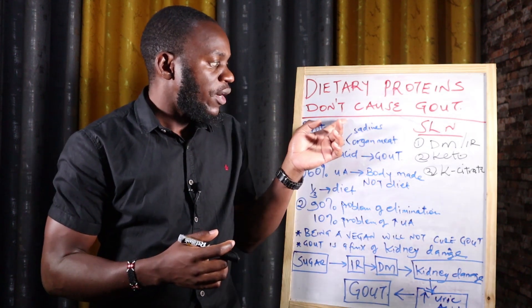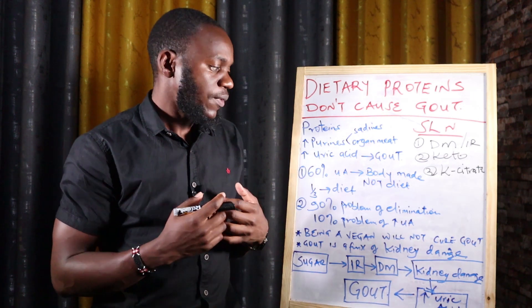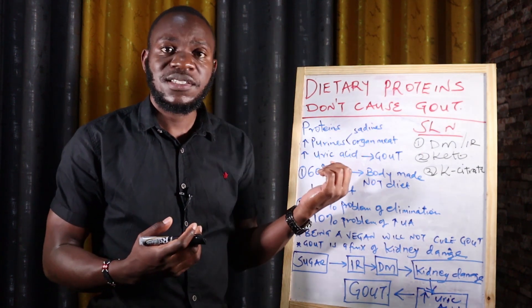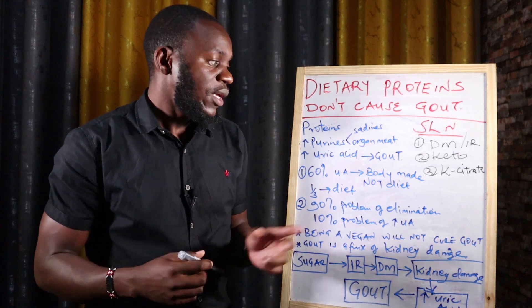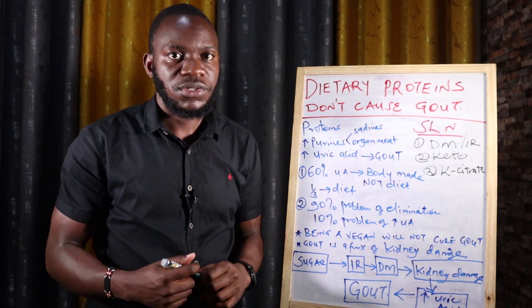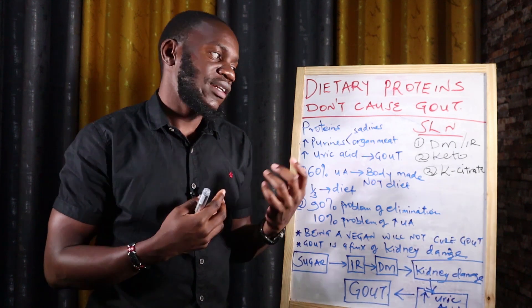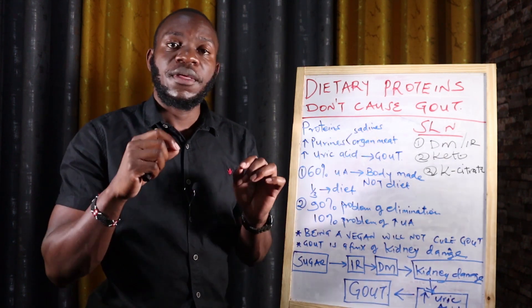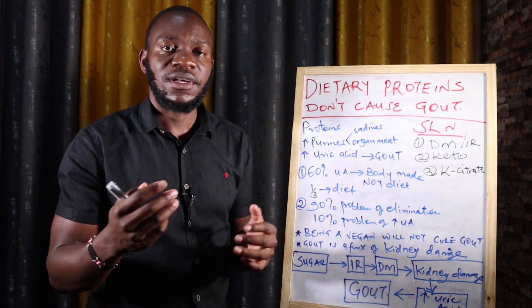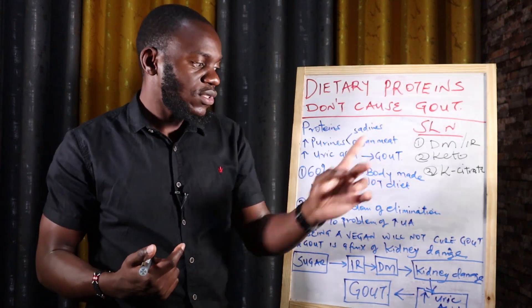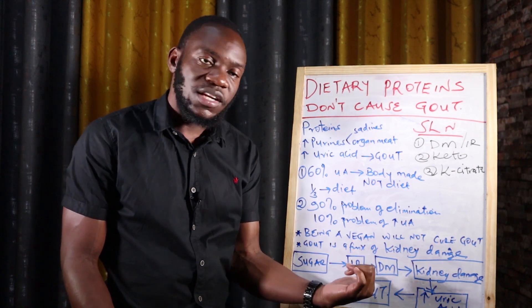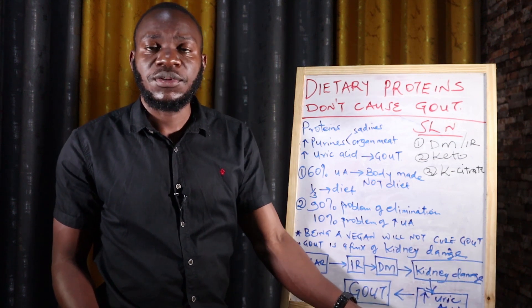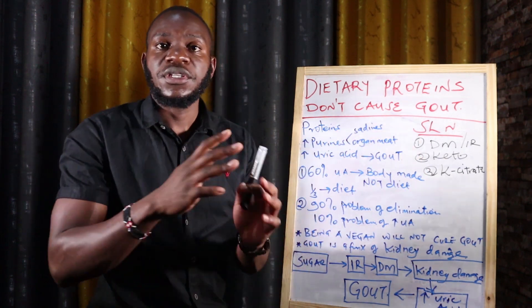Most of the time we blame other nutrients for problems caused by sugar. In gout, proteins have carried the burden of sugar — everyone has been made to believe proteins cause these inflammatory conditions, but in reality sugar causes the problem. The worst sugar is fructose, found in modern adulterated fruits, modern honey, energy drinks, and juices like Ribena and Lucozade. Fructose causes liver problems and kidney problems through fatty liver and diabetes, leading to uric acid accumulation.